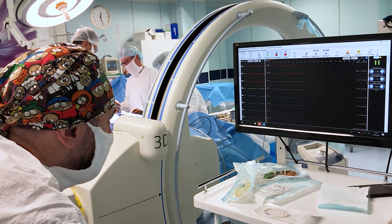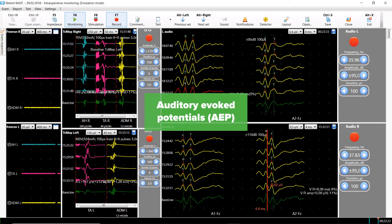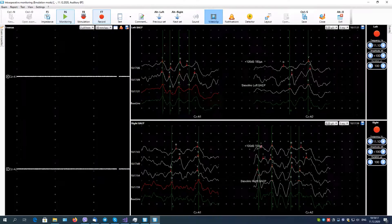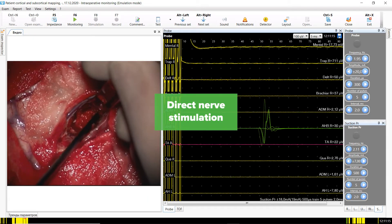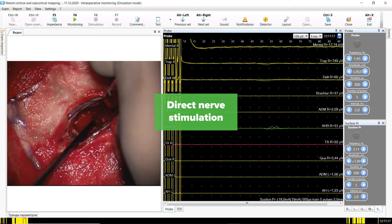Neuru IOM ensures other modalities including auditory and visual evoked potentials, electroencephalography, electrocorticography, direct nerve stimulation, and direct cortical stimulation.